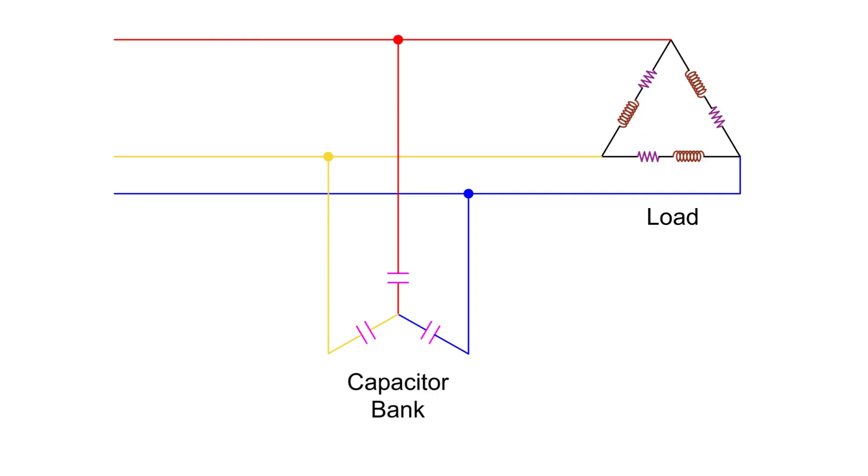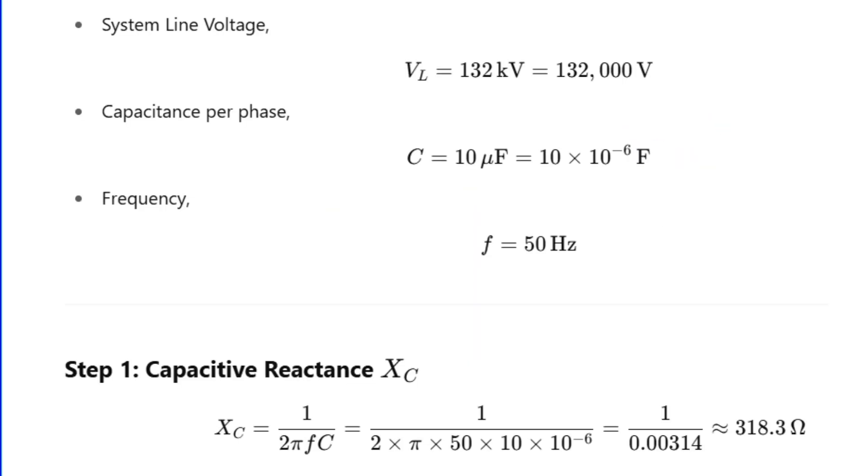Let's take a simple numerical example to see this more clearly. Suppose we have a three-phase 132 kilovolt system, and let's assume we use capacitors of 10 microfarads in each phase. First, let's calculate the capacitive reactance: XC equals 1 divided by 2πfC, where f is the system frequency, which is 50 hertz.